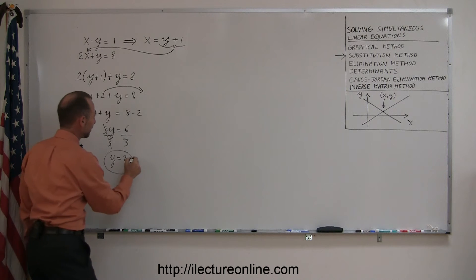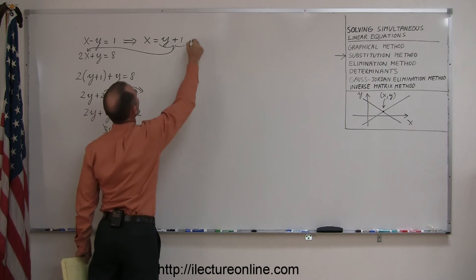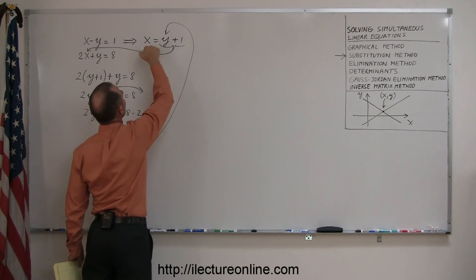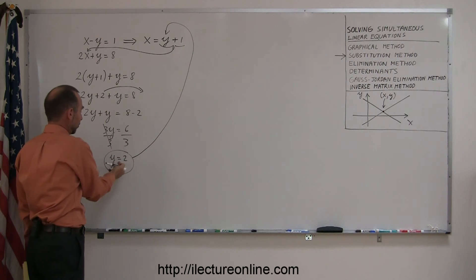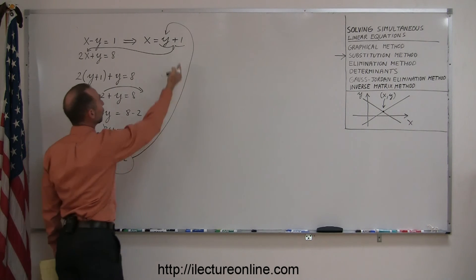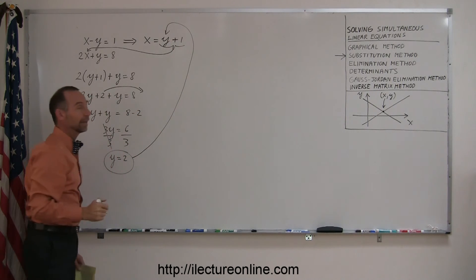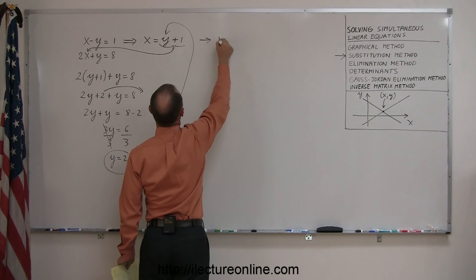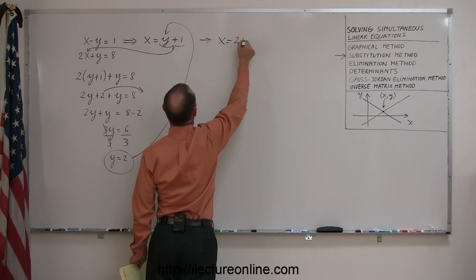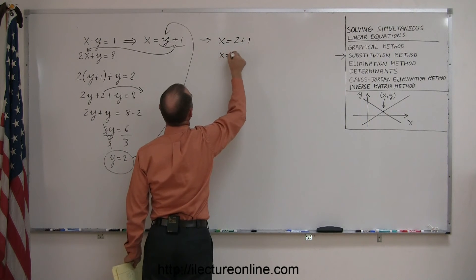Now what you do is you substitute that back into the original equation over here to solve for the variable x. Since you already have x in terms of y, and since now you know what y is equal to, you just go ahead and plug in that value for y into that first equation, solve for x. So this becomes x equals 2 plus 1, or x equals 3.